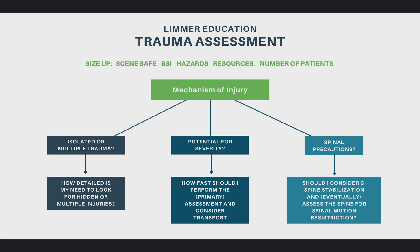Mechanism of injury is not guaranteed. If someone has a mechanism of injury, they may be more injured, but they may not be more injured. Nonetheless, it's part of the information that we get that forms that index of suspicion and an important part of our scene size-up.